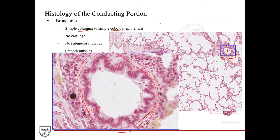The bronchioles are also where we find club cells, also known as Clara cells. These are typically difficult to discern from standard microscopy, appearing more in smaller bronchioles. Their cytoplasm is packed with clear-staining vesicles on the apical surface containing a surfactant-like substance. When released into the lumen, this substance coats the apical epithelial surface and reduces the surface tension of water, making it much easier to reopen small bronchioles should they collapse.